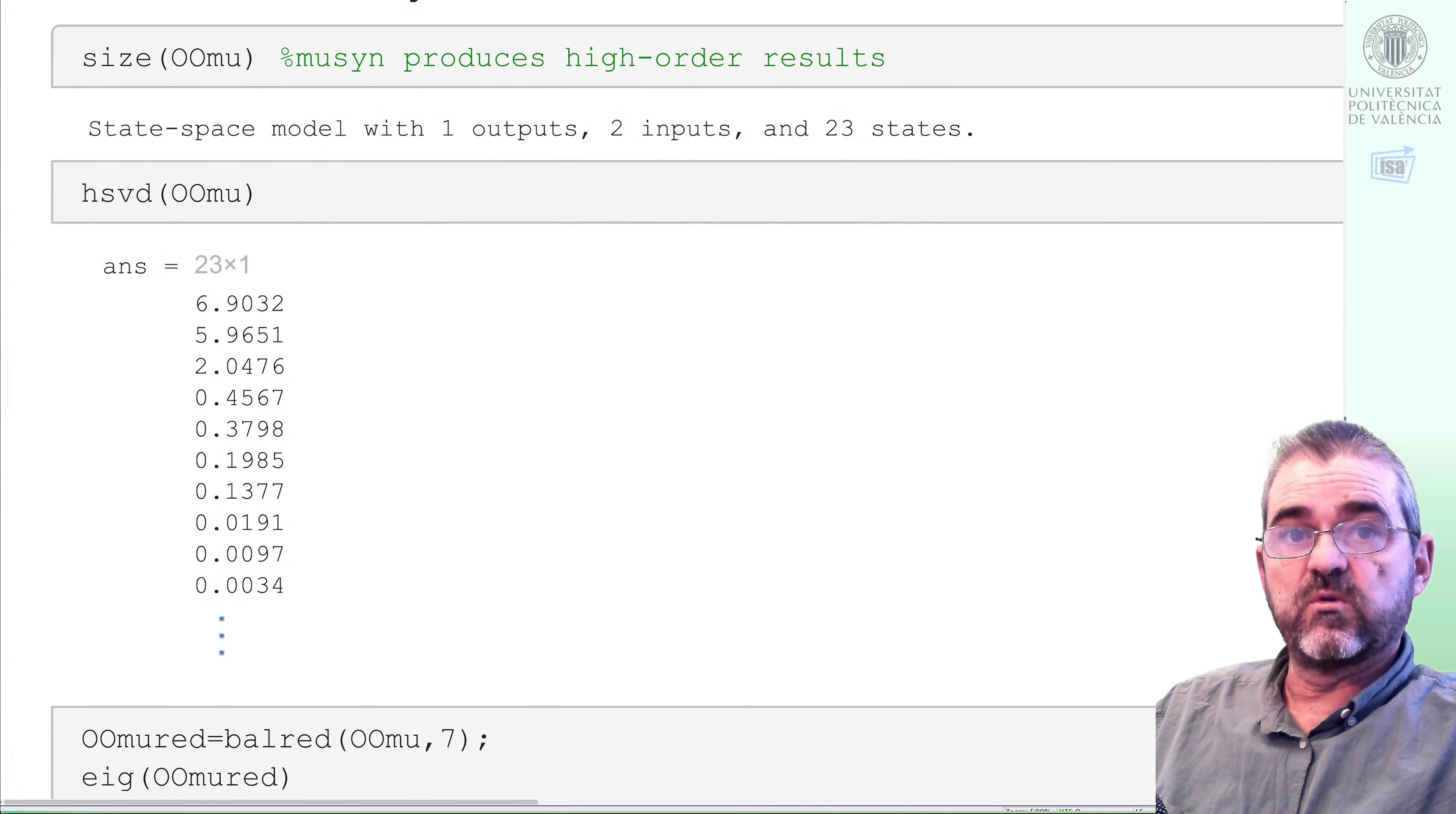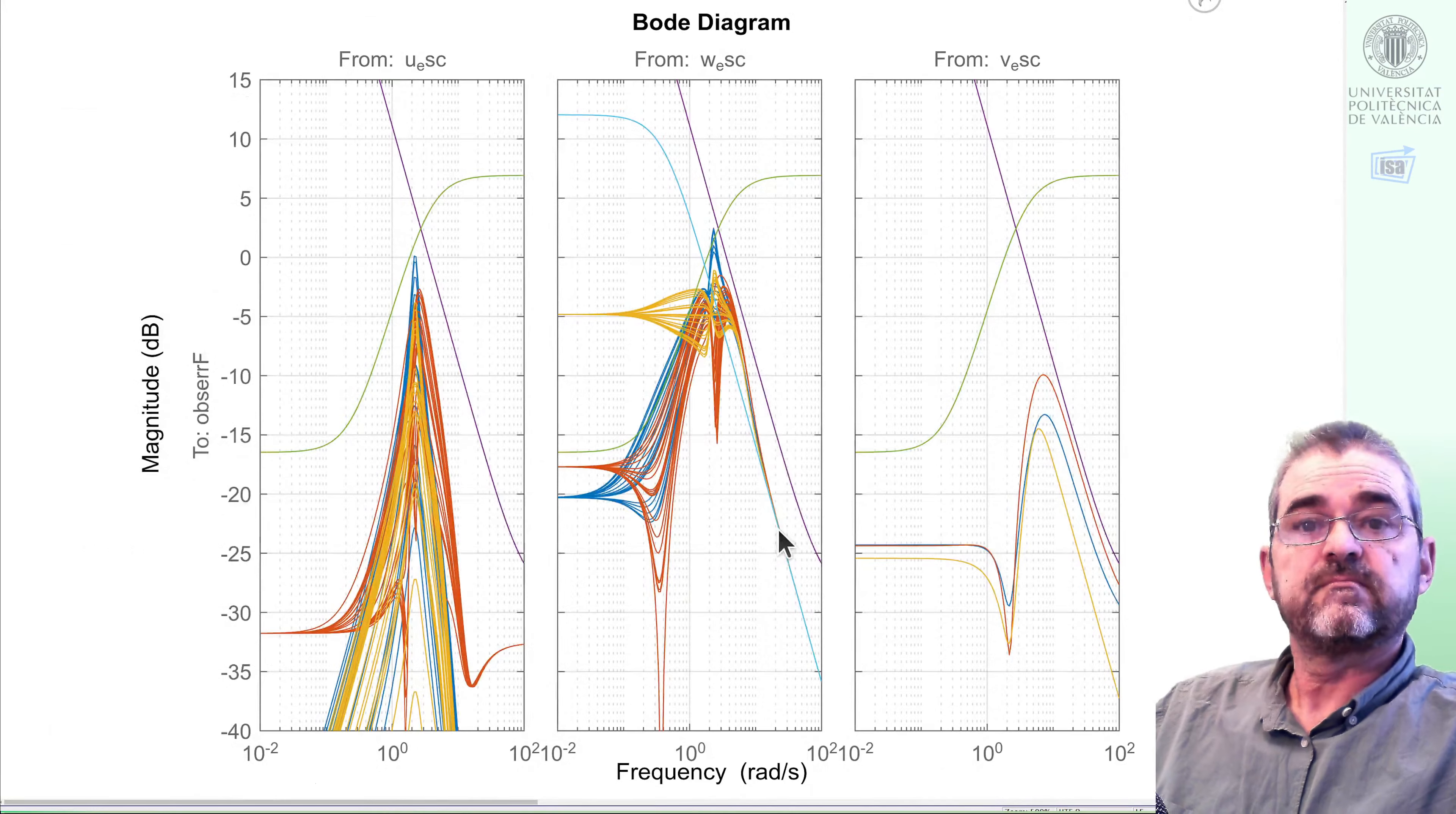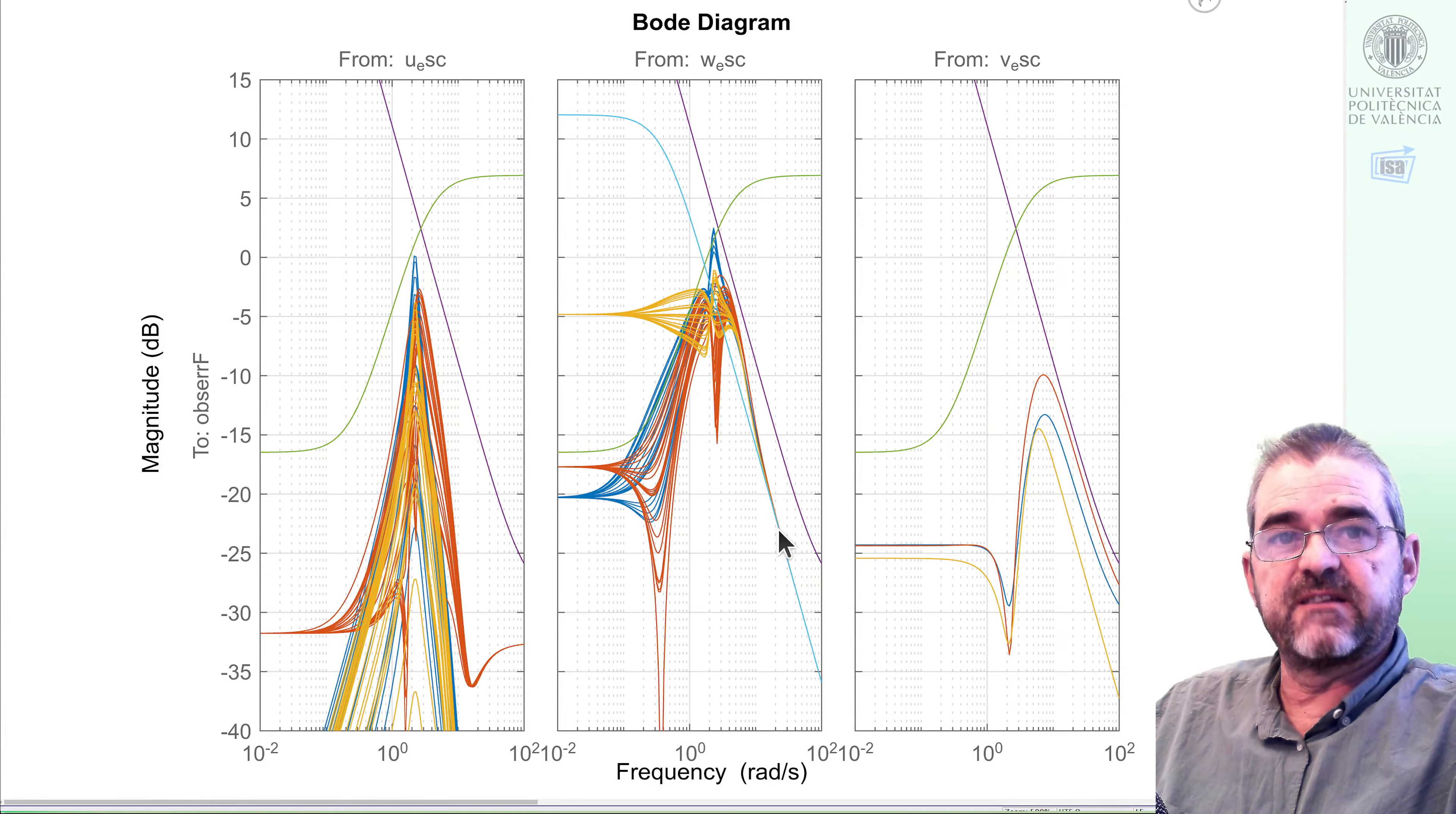We did an order reduction to order 6 and we still kept our robust performance worst-case gain below 1, we were very lucky. And finally we compared in frequency domain whether the frequency response was below the templates when throwing the dice and generating random uncertain plants to confirm those worst-case gain results.